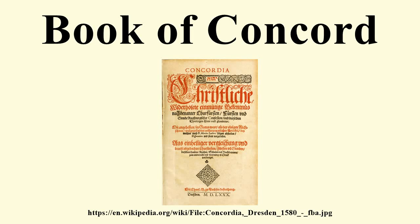The Book of Concord, or Concordia, is the historic doctrinal standard of the Lutheran Church, consisting of ten creedal documents recognized as authoritative in Lutheranism since the 16th century. They are also known as the symbolical books of the Evangelical Lutheran Church. The Book of Concord was published in German on June 25, 1580, in Dresden, the 50th anniversary of the presentation of the Augsburg Confession to Emperor Charles V at the Diet of Augsburg. The authoritative Latin edition was published in 1584 in Leipzig. Those who accept it as their doctrinal standard recognize it to be a faithful exposition of the Bible, with the Holy Scriptures set forth as the sole divine source and norm of all Christian doctrine.